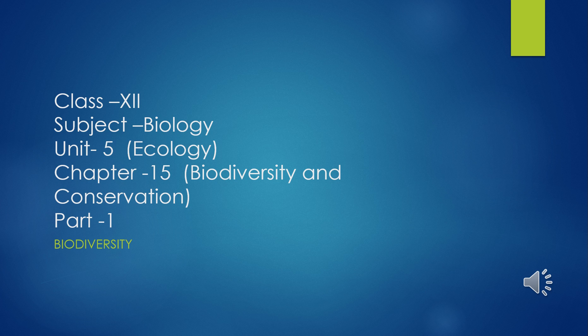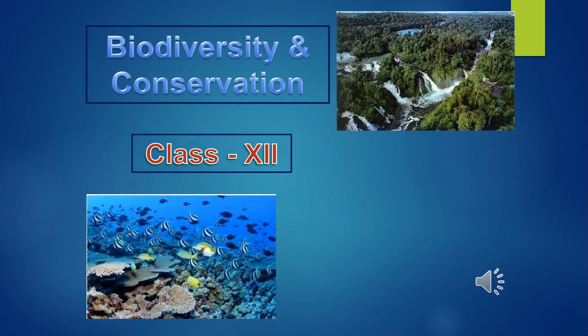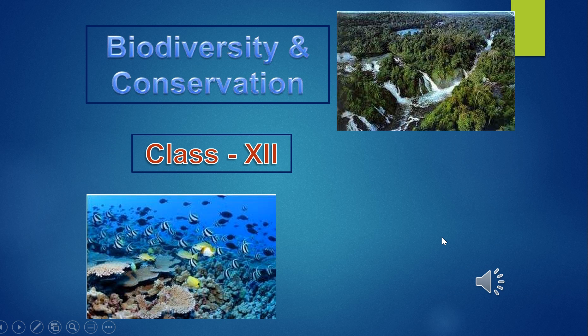In this chapter we will study about the magnitude of biodiversity, genetic diversity, ecological diversity, species diversity and patterns of biodiversity, importance of species diversity to ecosystems, causes of biodiversity loss, and we will learn why we should conserve biodiversity — including conservation strategies such as in-situ conservation and ex-situ conservation in detail.